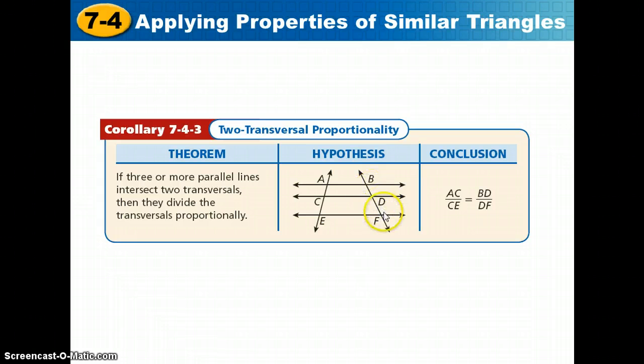We could come up with several different proportions from this given situation. I could compare AC to BD, that would be the same as CE to DF. I could compare AC to all of AE, that would be the same as BD to all of BF, and there's many more proportions we could come up with.